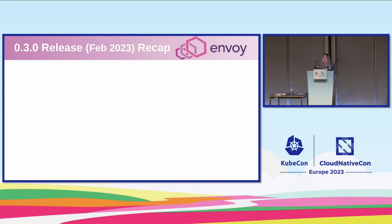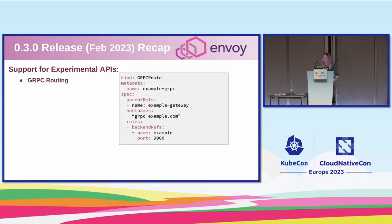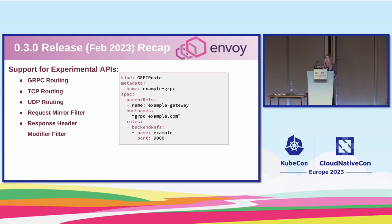Quick recap about our 0.3.0 release back in February. We added support for the experimental APIs in the Gateway API, such as GRPC routes, which give you first-class support for your GRPC services. We also added support for TCP routes and UDP routes, so that lets you handle raw TCP and raw UDP traffic. You can do TLS pass-through with these if you just want to operate on TCP and UDP traffic at a high level. We also added support for request mirror filters and response header modifier filters. The mirror filter lets you configure where else you'd like to mirror requests to — if you get a response from the mirrored destination, we don't do anything with it, but it lets you do things like shadow traffic.